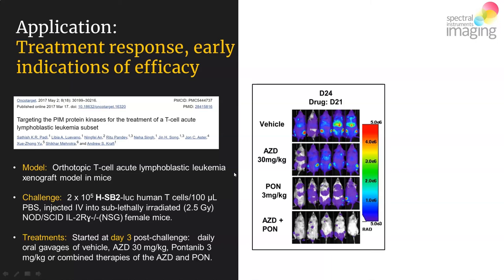They developed a pan-PIM protein kinase inhibitor in the form of AZD and evaluated its in vivo efficacy. The treatment involved taking 200,000 cells of this particular T-cell strain — known to express elevated PIM protein kinases, already transduced with luciferase — injecting them via tail vein, waiting three days, and then proceeding to treat. The 20 challenged mice were randomly grouped into four treatment groups: vehicle alone, AZD at 30 mg/kg, ponatinib (another known multiple protein kinase inhibitor included for relative efficacy comparison), and a combinatorial therapy of both AZD and ponatinib.